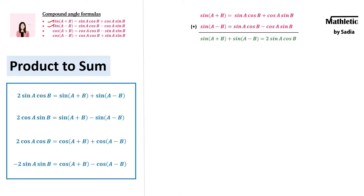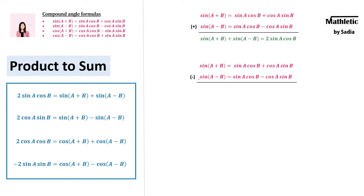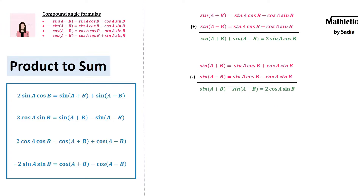Similarly, we use the same equations but instead of adding them, we subtract them. Subtracting changes the sign of the second equation, giving us sin(a+b) minus sin(a−b) on the left side. On the right side, the sin(a)cos(b) terms cancel out, leaving cos(a)sin(b) plus cos(a)sin(b), which is 2cos(a)sin(b). That is the second formula.